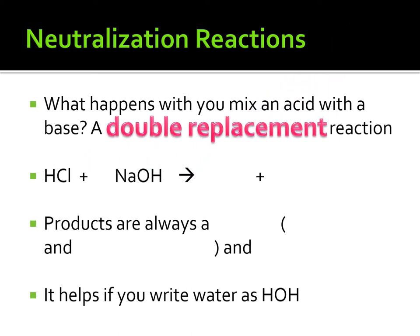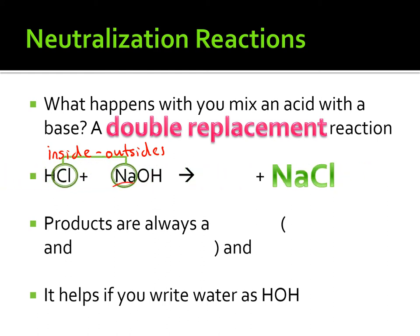This reaction is a double replacement. We use a phrase — inside-outside — to determine the two new products. Starting with the inside: we have Na coming from the base. Na is a positive metal, and Cl is a negative ion coming from the acid. With the positive going first, Na goes first, Cl goes second, and we have our salt — sodium chloride, NaCl.